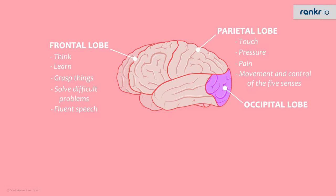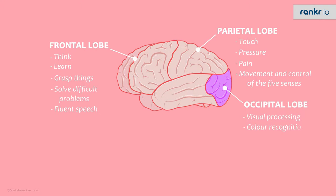And what about the occipital lobe? When you are able to see a beautiful sight of sunrise or sunset, the stars in the clear night sky, or even the bright and beautiful blossom on a tree, you should thank the occipital lobe, as it takes care of visual processing and colour recognition.